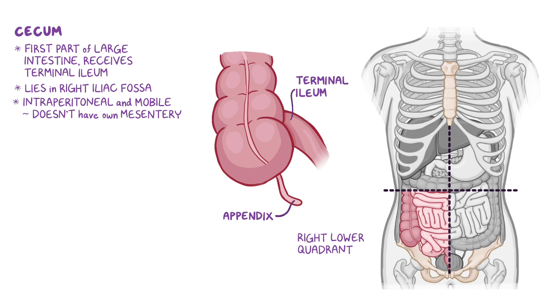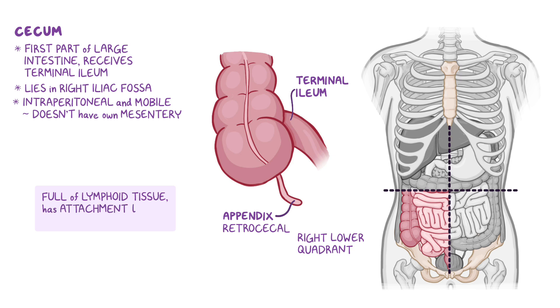The appendix is usually retrocecal, meaning behind the cecum, but its position can vary. It's full of lymphoid tissue and its proximal part has attachment to the cecum by a small mesentery called the mesoappendix.